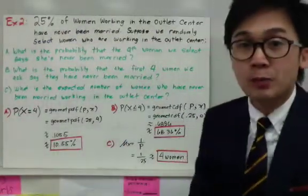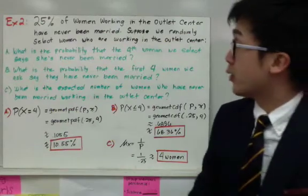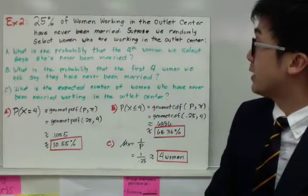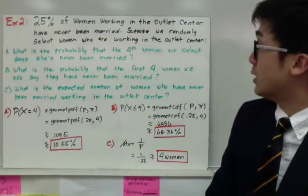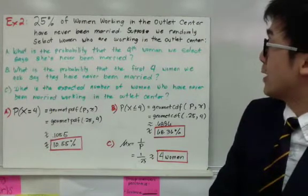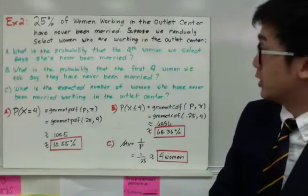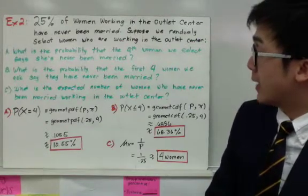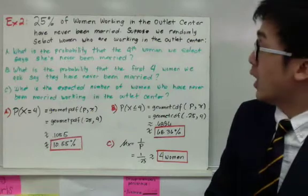In example number 2, we have three sub-questions. Example number 2: 25% of women working in the outlet center have never been married. Suppose we randomly select women who are working in the outlet center. How do we answer letter A, letter B, and letter C?